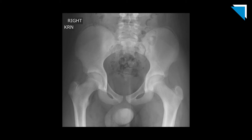This is a good opportunity to review some of the most common pelvic avulsion injuries. It's very important to make all of these landmarks part of your normal search pattern when reviewing pelvic radiographs. This is the full AP radiograph from the patient we just discussed, showing the sartorius injury at the anterior superior iliac spine. Just inferior to the sartorius origin is the origin of the rectus femoris at the anterior inferior iliac spine.